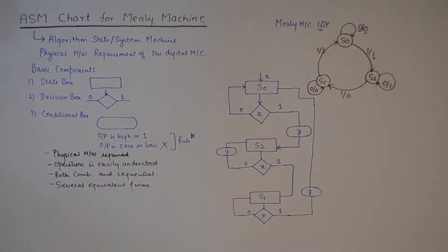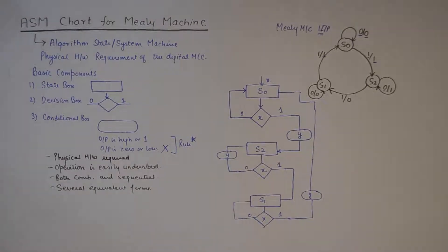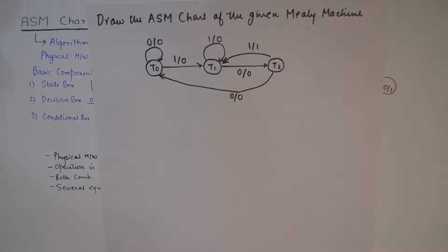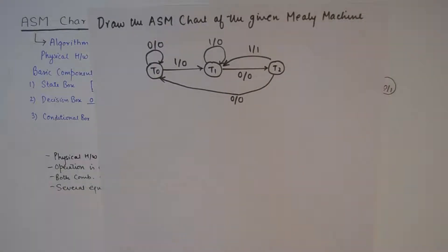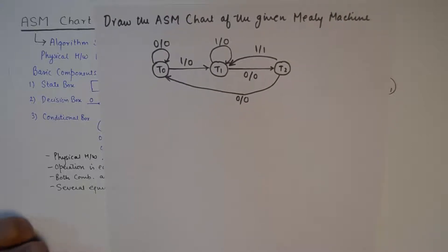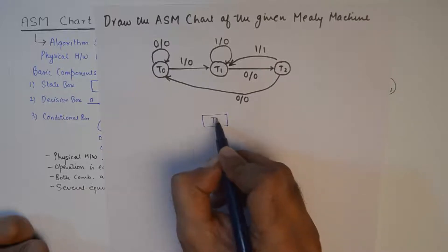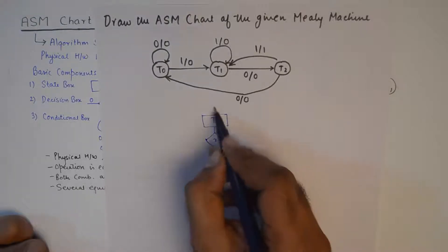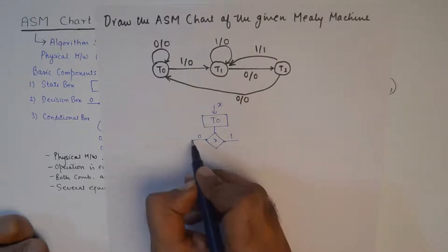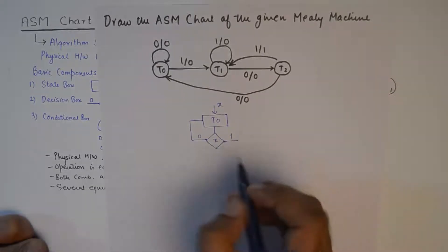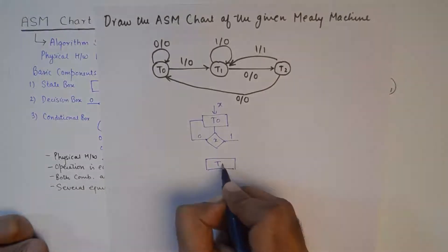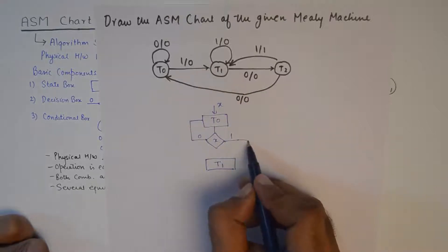I'll take up one more example of a Mealy machine to illustrate the ASM chart. We need to draw the ASM chart of the given Mealy machine. Now that we have the understanding of how this works, this has three states. The first state will be T0 — we have a decision box with two options, 0 or 1. Input 0 takes us back to T0 without any output as 1, and when we give a 1 we go to T1 with output 0, so no conditional box is required.